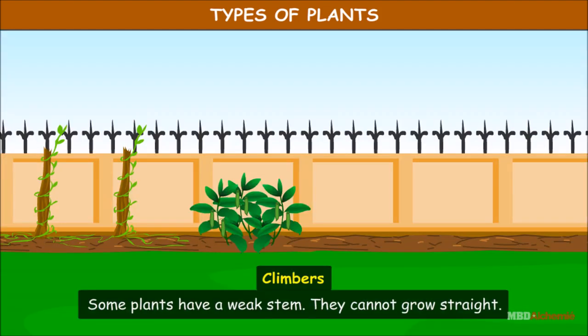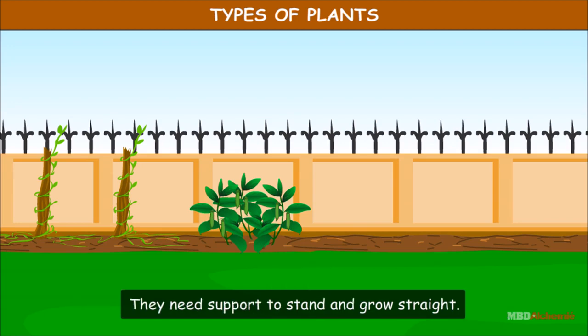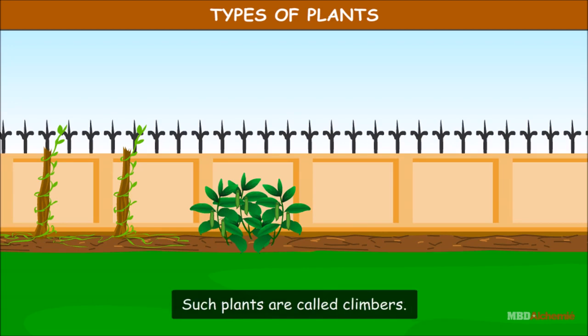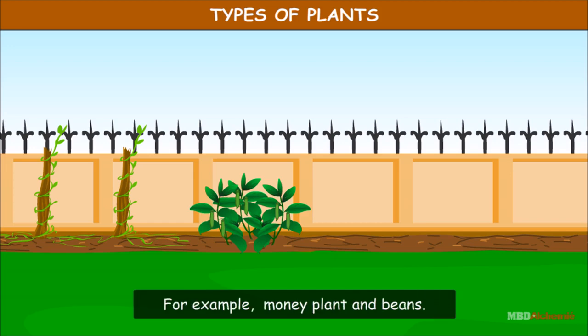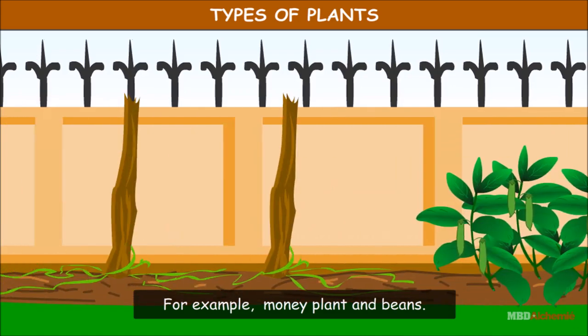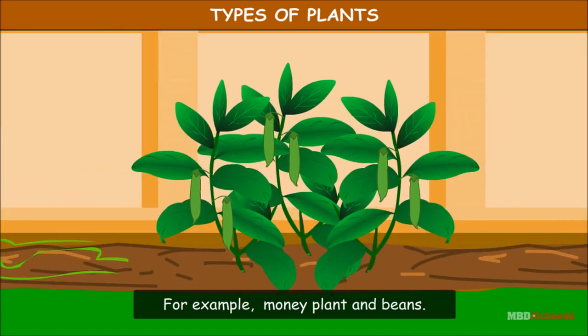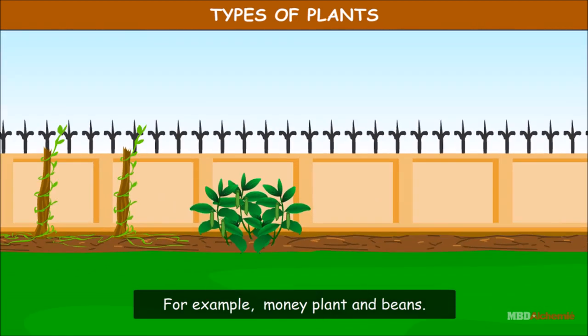Climbers are plants that have a weak stem. They cannot grow straight and need support to stand and grow straight. Such plants are called climbers. For example, money plant and beans.